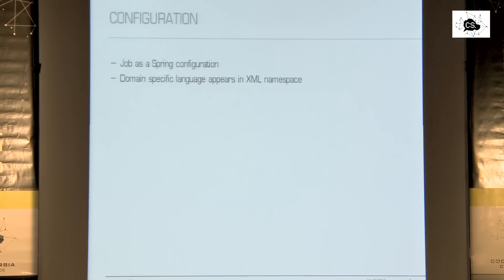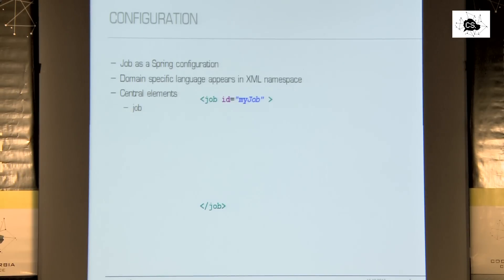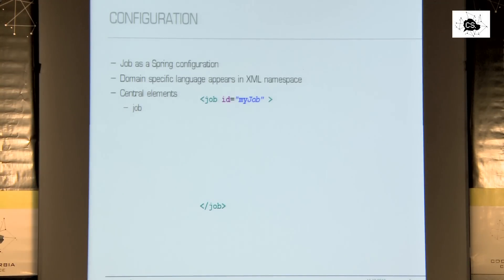The job is configured as a Spring configuration. Since SpringBatch 2.2, you can do it in Java config as well, but I will show the XML example first. The domain vocabulary appears directly in the XML. The central element is the job — it gets a unique ID, which is the name of the job. There is a specific namespace for the batch definition. After the job, we get the step — it gets an ID as well. In this configuration I have just one step, but of course there can be more steps and you can define a flow between those steps.